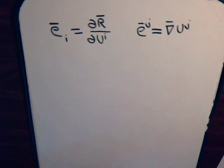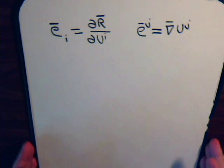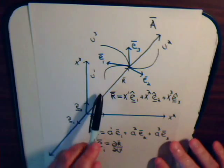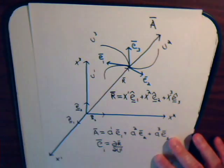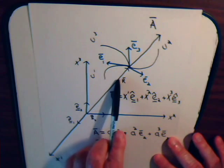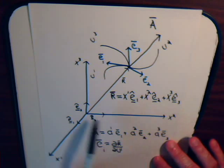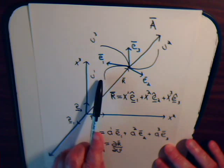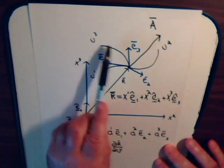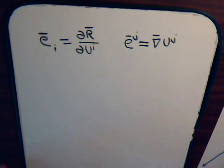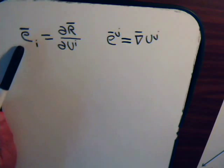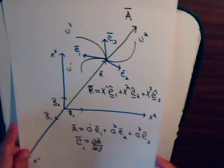In the previous videos we had discussed two kinds of operations in a general curvilinear system. We had three coordinate axes u1, u2, u3 and a position vector expressed in terms of Cartesian or curvilinear coordinates. When we take the partial of the position vector with respect to any one of the coordinate axes, that gives us a tangential vector, as shown in this diagram.